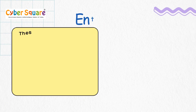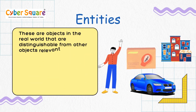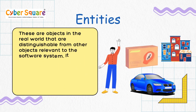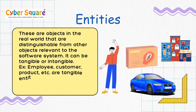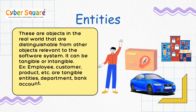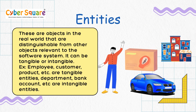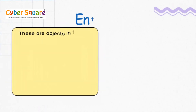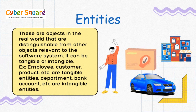Entities are objects in the real world that are distinguishable from other objects relevant to the software system. They can be tangible or intangible. Employee, Customer, and Product are examples of tangible entities. Department and Bank Account are examples of intangible entities.